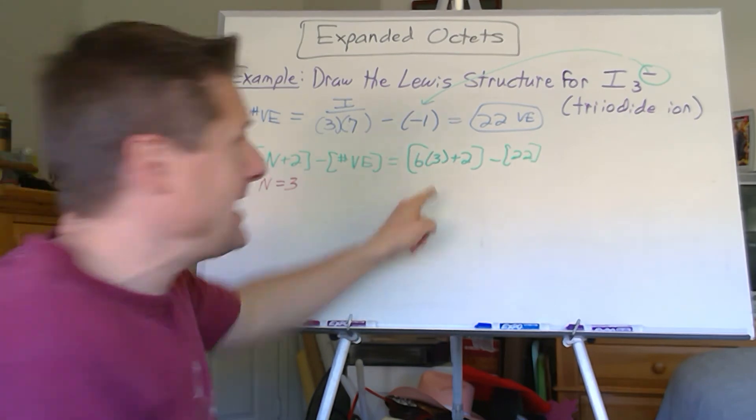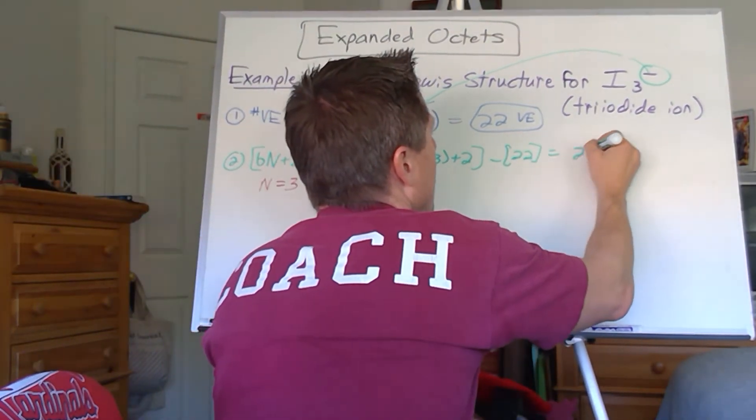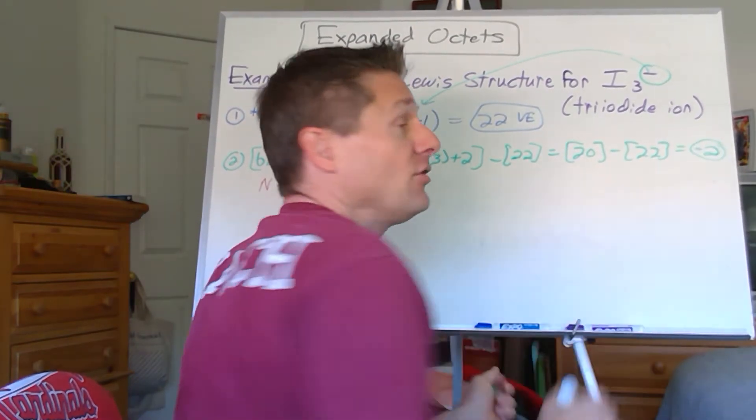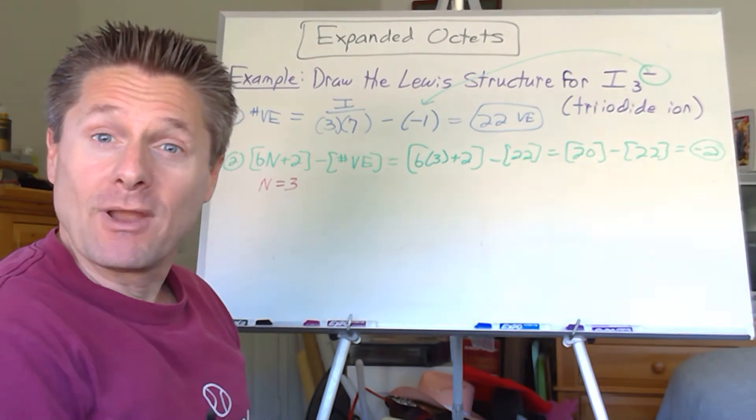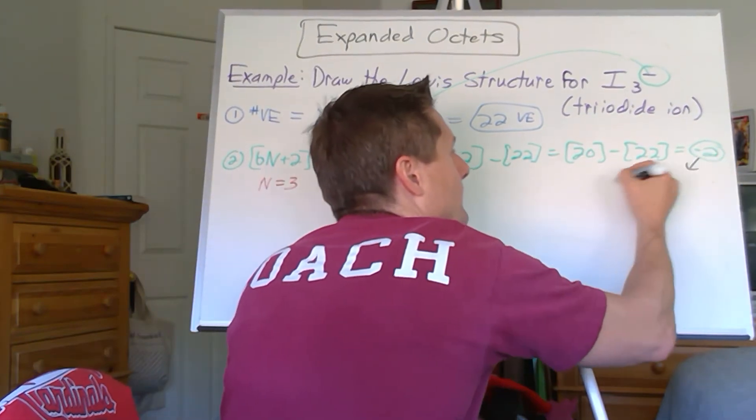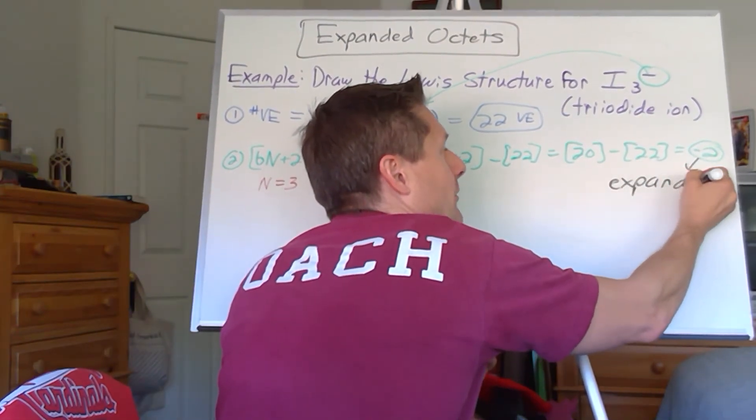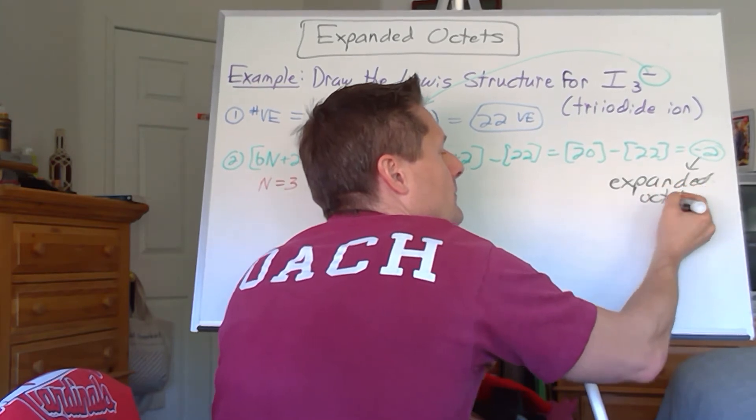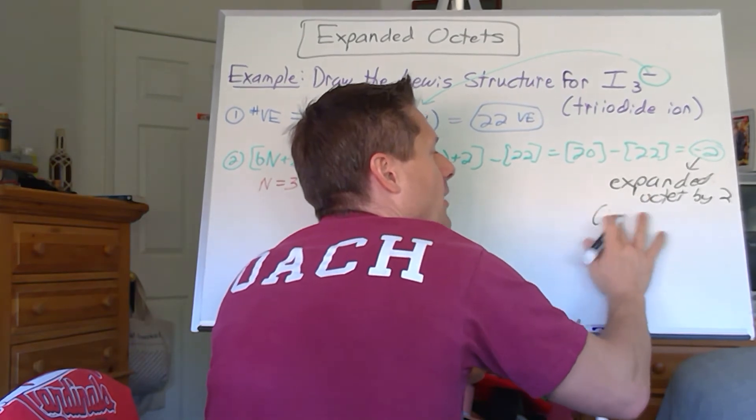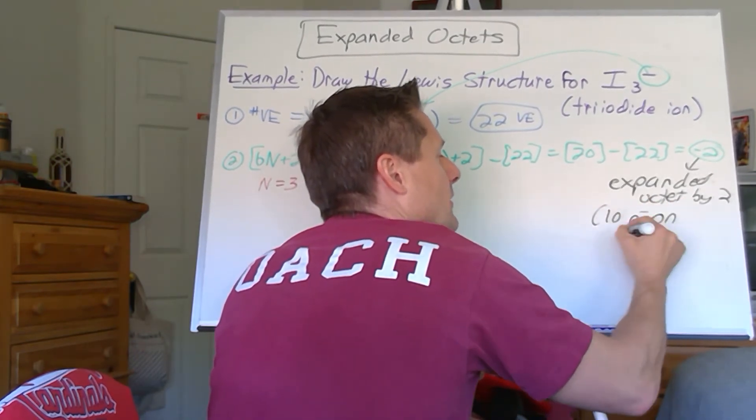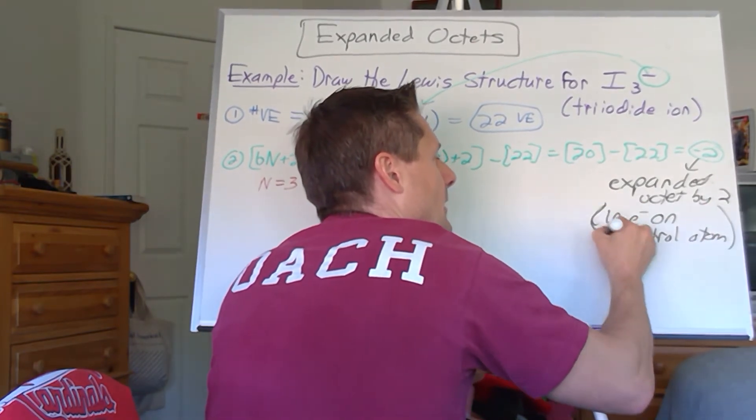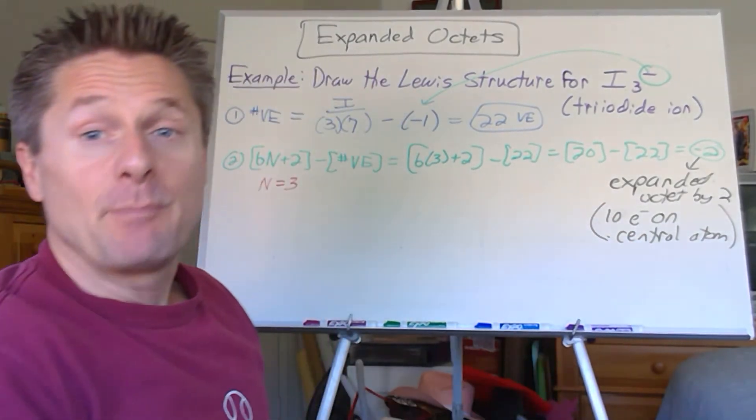So let's do six times three plus two minus 22. So six times three is 18. 18 plus two minus 22 is 20 minus 22 is negative two. That's what we got last time. It's exactly what we got last time. So that means we have an expanded octet. Of course, you don't need to write that down.